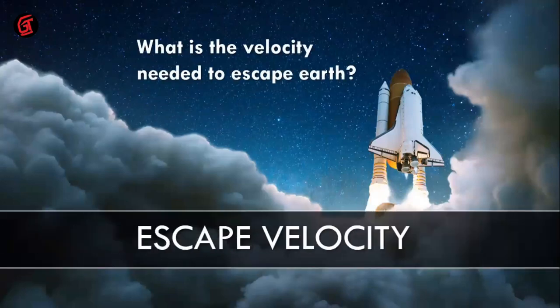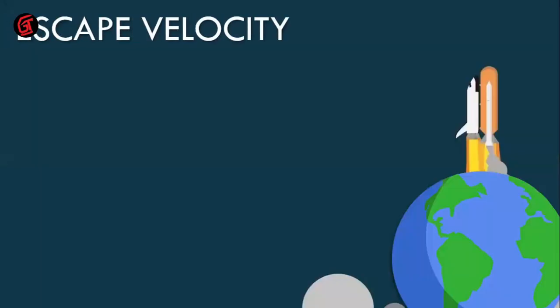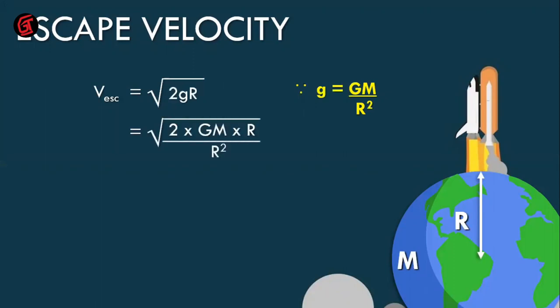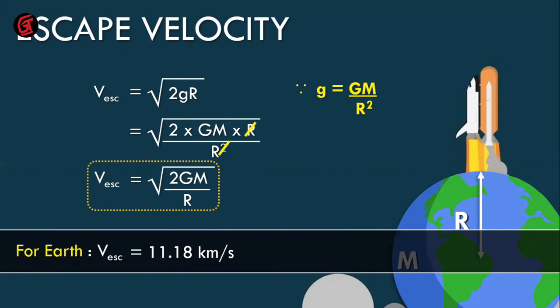Escape velocity is the particular velocity required for a satellite to go away from the earth. We measure it using the formula: v = √(2GM/R), where G is the gravitational constant, M is the mass of the earth (which is constant), and R is the radius of the earth. This formula gives the escape velocity for any satellite.